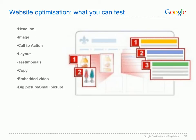What sort of things can you test with website optimization? You can change the headline, image, experiment with the call to action, the layout, maybe include some testimonials, copy, perhaps embed a video, and perhaps change the pictures.